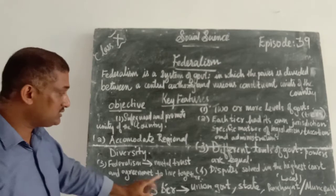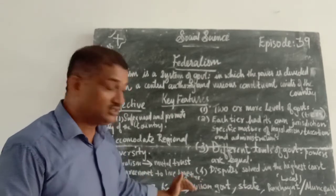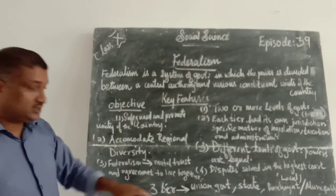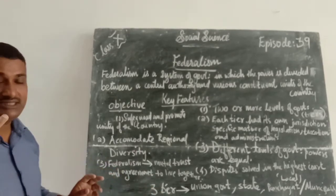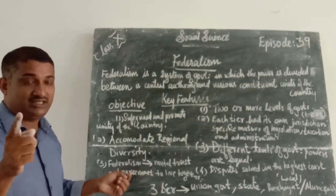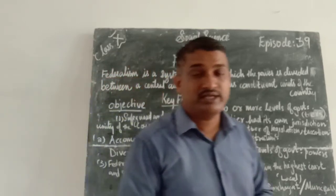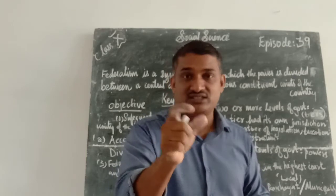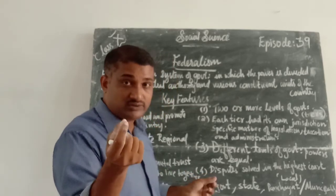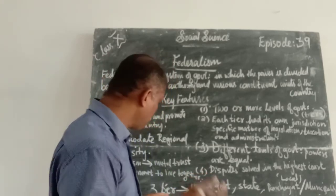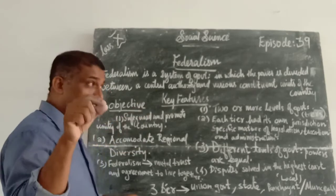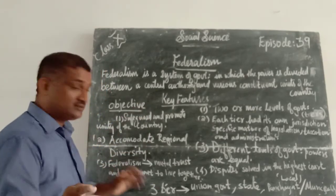Next: there are three tiers of government — three levels. TIER is spelled T-I-E-R, not T-Y-R-E. TIER means levels. In examination, some children may write T-Y-R-E instead of T-I-E-R — that is different. Here T-I-E-R means levels. Three levels of government. Which are the three levels? Union Government — that is national government — at the national level.